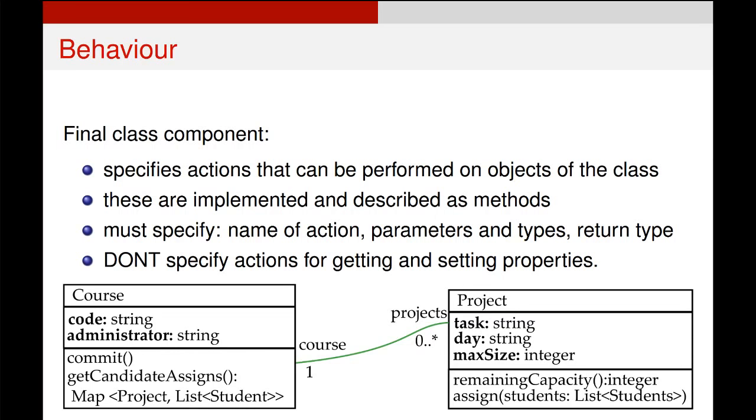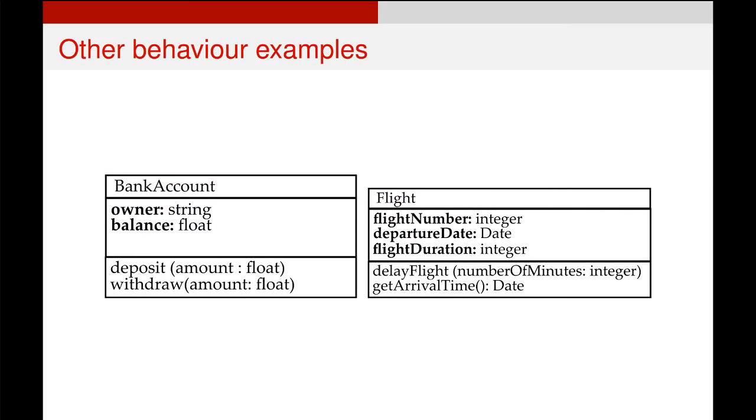Two other examples which I think are useful: let's say you've got a bank account object with some attributes. Two actions you might want to do on a bank account are deposit and withdraw, with an amount parameter of type float for each.